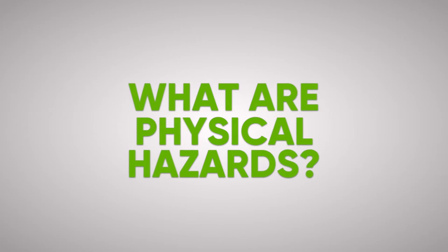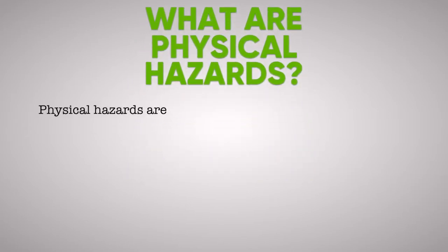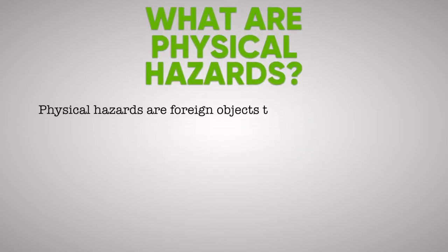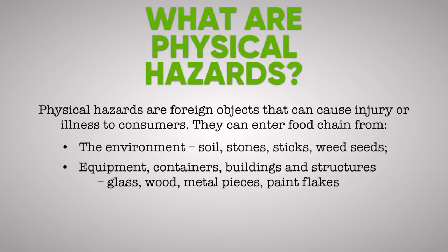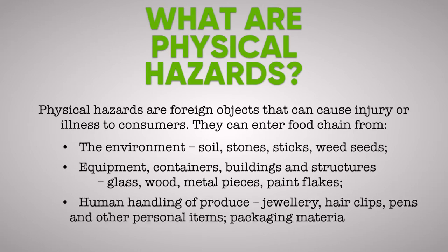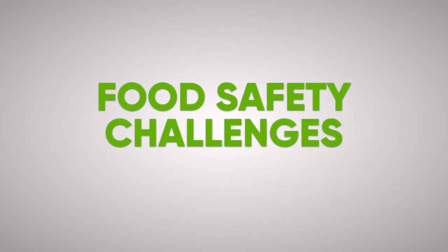What are Physical Hazards? Physical hazards are foreign objects that can cause injury or illness to consumers. They can enter the food chain from the environment, equipment, containers, buildings and structures, human handling of produce, and packaging material.